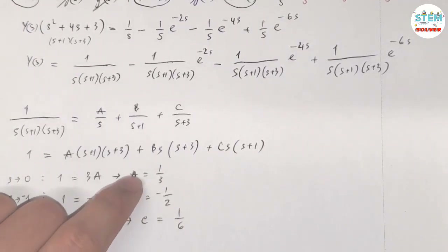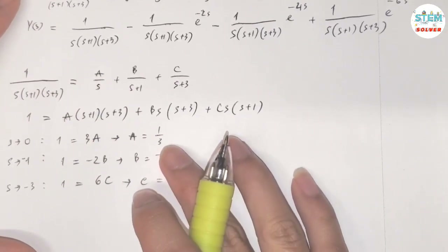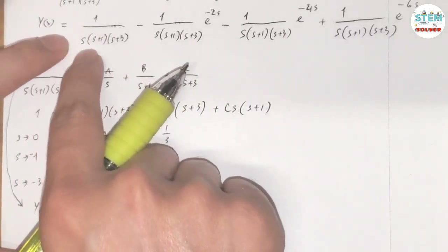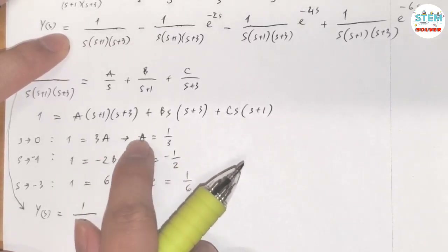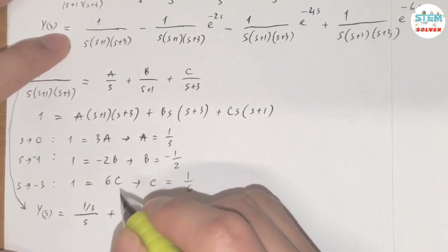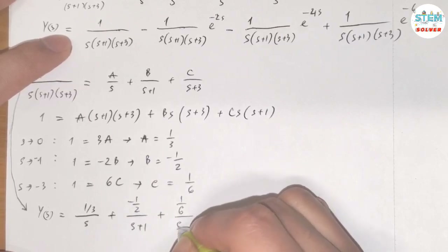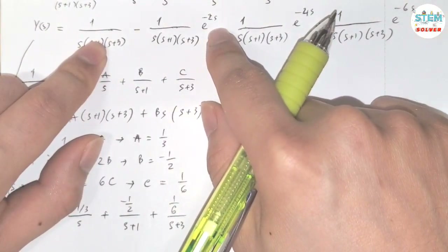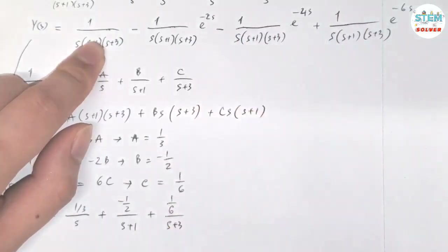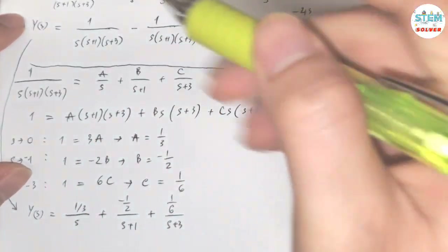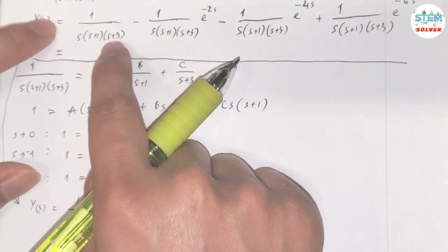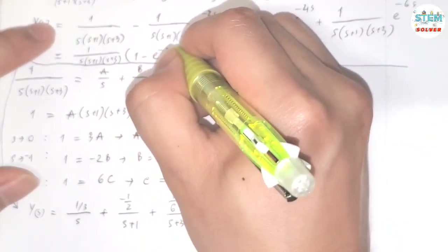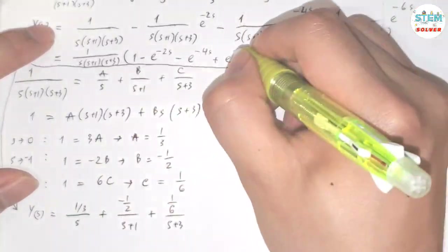Plugging the constants back in: 1/[S(S+1)(S+3)] = (1/3)/S + (-1/2)/(S+1) + (1/6)/(S+3). Now, I'm going to factor out 1/[S(S+1)(S+3)] from all terms in Y(S), so in parentheses I have (1 - e^(-2S) - e^(-4S) + e^(-6S)). However, when I take the inverse Laplace transform I have to multiply this back out again.